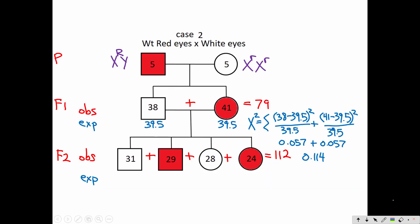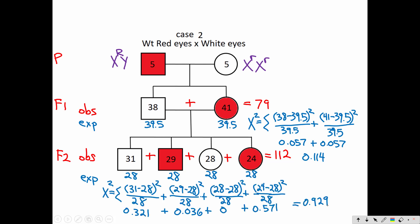Now for the F2 generation, in this case I'm expecting one-fourth of each of those types of offspring. Not 75%, 25% anymore. This is not a dominant recessive autosomal trait. So I'm going to take the 112, divide it by 4. That gives me 28. And then I'll write up my chi-square calculation below each of the types of offspring. And my final chi-square number is 0.929.